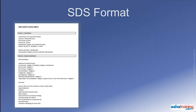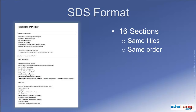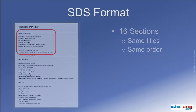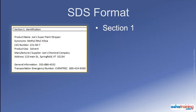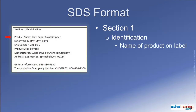In the new format, all safety data sheets will be broken down into 16 separate sections. The sections will always have the same titles and will always appear in the same order. Now let's take a look at the information that must appear on GHS-compliant safety data sheets, starting with Section 1. Section 1 on safety data sheets is titled Identification.